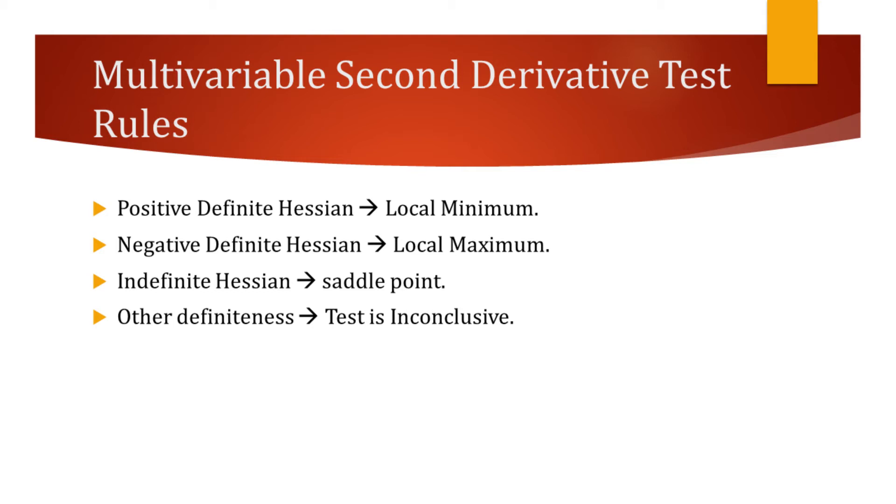However, if Hessian is of other definiteness, such as positive semi-definite or negative semi-definite, the second derivative test is inconclusive.